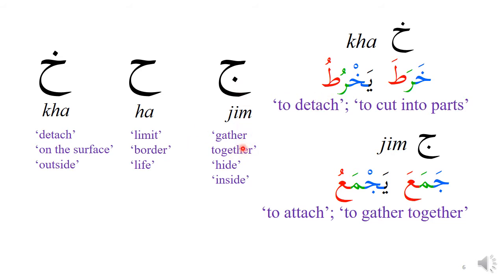The general meanings of JIM are: to gather together, to hide something — 'janna,' to hide — and inside, as 'jaufa' means inside. HA means to limit, on the border, and another meaning is life — 'hayat.' KHA means to detach on the surface or on the outside, something visible. And because JIM is inside, something is hidden — 'janna' — hidden from view.